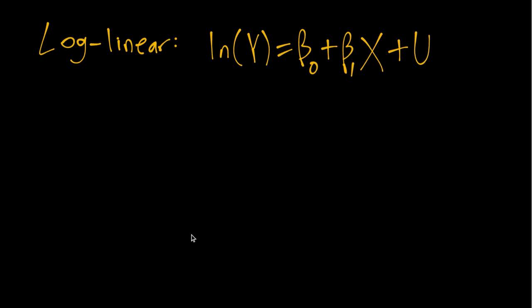We're going to focus on the interpretation, in particular of this beta_1 slope coefficient in the model. As a reminder, when we say log in economics we are almost always referring to the natural log function. So I'll just say log to refer to natural log.